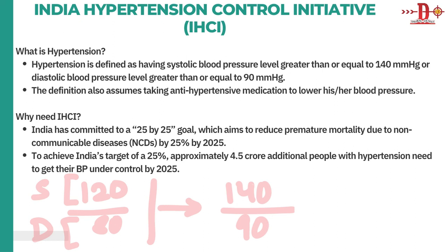The definition also assumes that taking antihypertensive medicine will lower blood pressure. Why do we need such an initiative? India is committed to the '25 by 25' goal — which aims to reduce premature mortality due to non-communicable diseases by 25% by 2025. To achieve this target, approximately 4.5 crore additional people with hypertension need to get their BP under control by 2025.